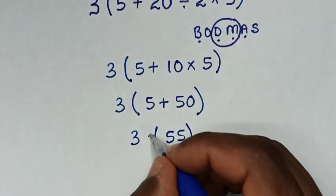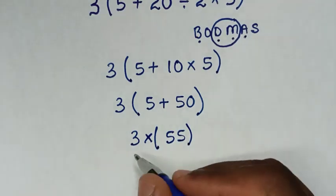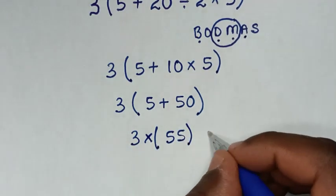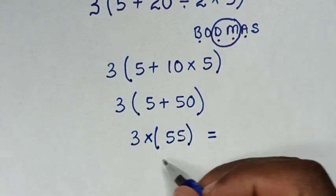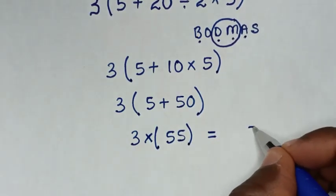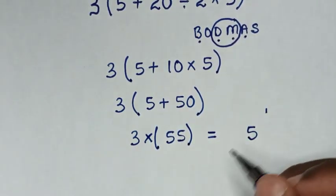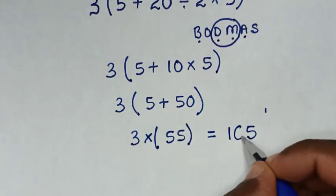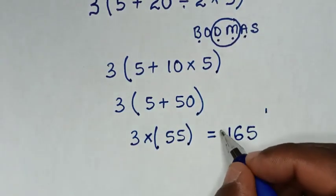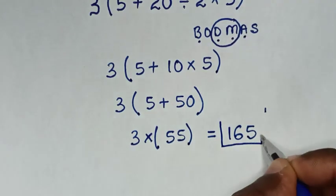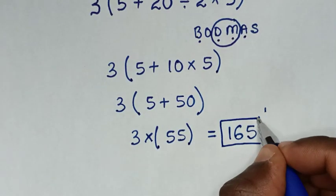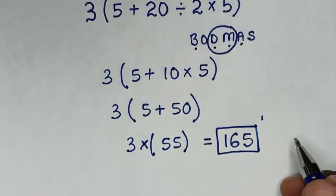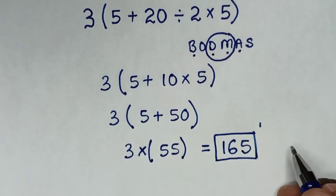Now between 3 and 55 we have multiplication, so we do 3 times 55. 3 times 5 is 15, then 15 plus 150 is 165. Therefore, 165 is our final answer. Thank you, don't forget these steps — subscribe to my channel and see you in the next video!